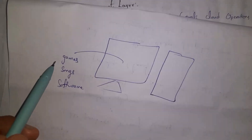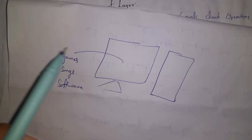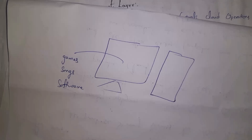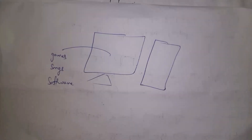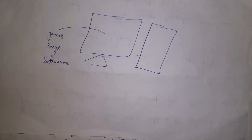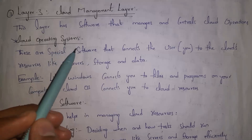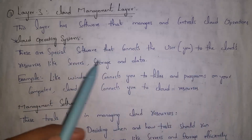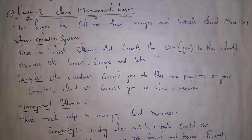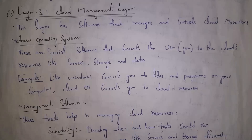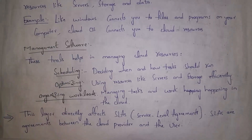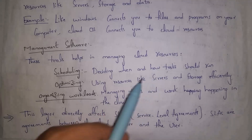Just as you need to install an operating system on your computer before running games or movies, in the cloud you also need to install an operating system before using cloud resources like servers, software, and storage. Cloud operating systems are special software that connect the user to cloud resources such as servers, storage, and data — similar to installing Windows on a regular computer.